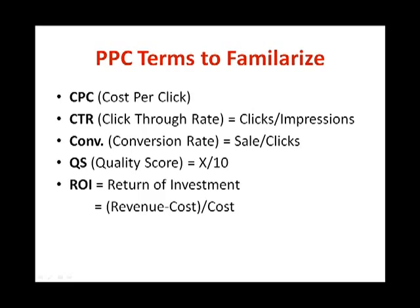Here are some of the terms you need to be familiar with in PPC — you will encounter these over and over again in your campaigns. CPC stands for cost per click. CTR stands for click-through rate, calculated by clicks over impressions. CONV stands for conversion rate, calculated by sales divided by clicks. QS stands for quality score, rated between 1 to 10. ROI stands for return on investment, calculated by revenue minus cost, then divided by cost.